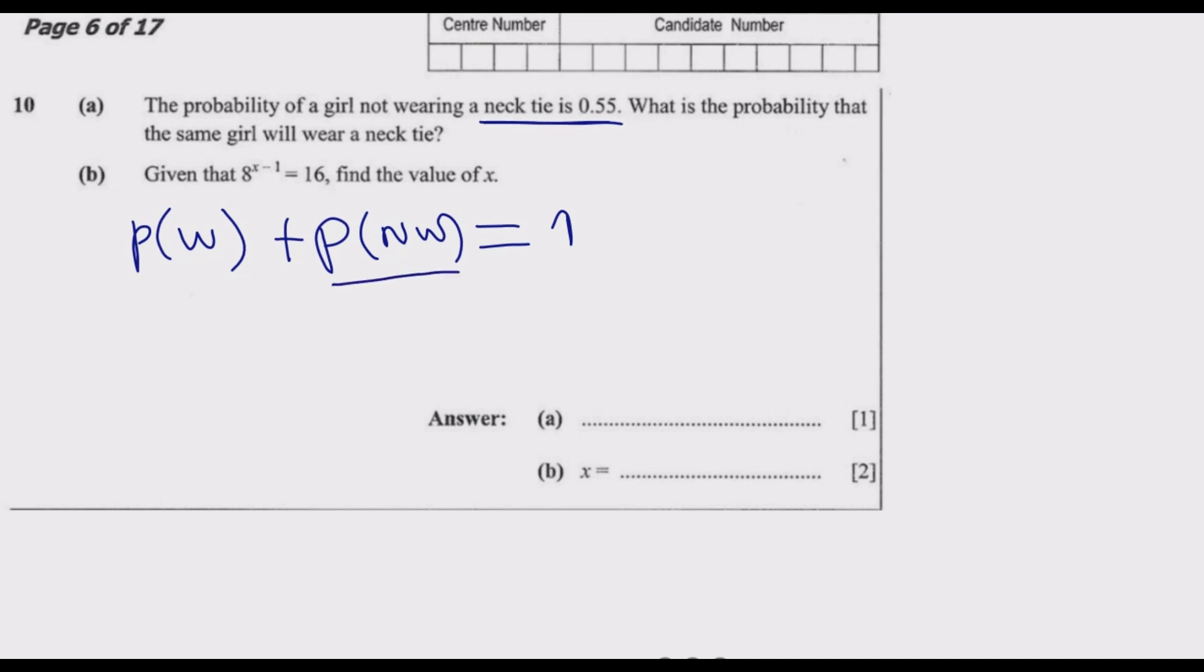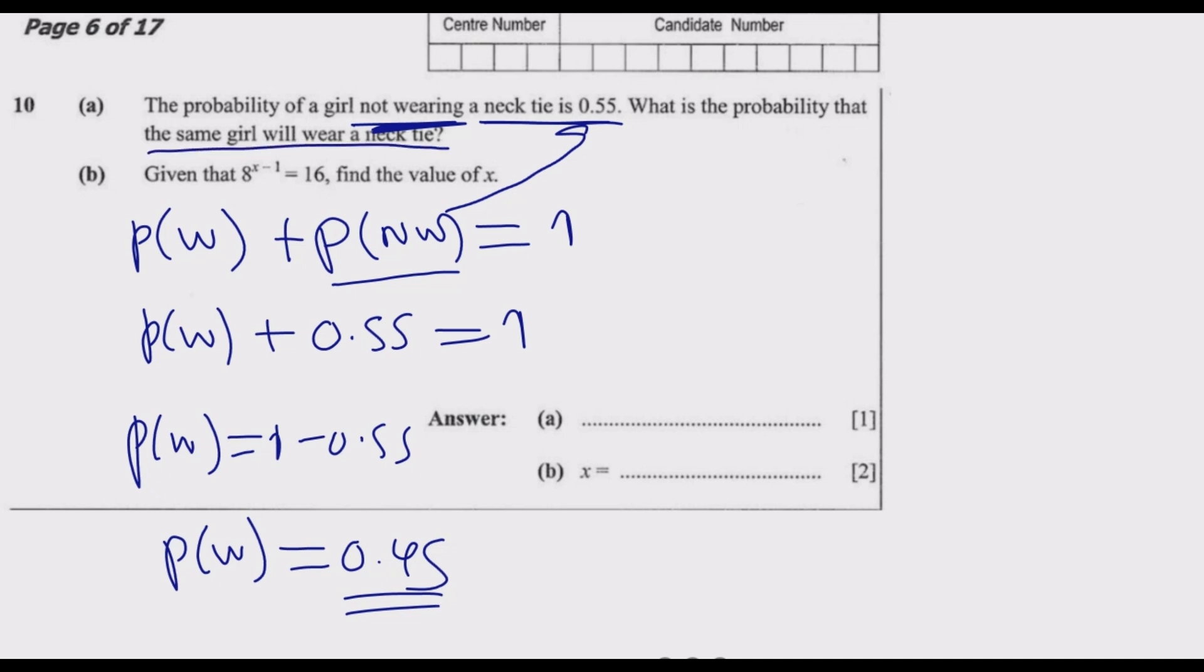We are told that the probability a girl does not wear a necktie is 0.55. So we solve for P(W). Probability that a girl wears a necktie is 1 minus 0.55, which equals 0.45. That's the probability that the girl will wear a necktie. Remember, probability of everything adds up to 1 - that's the key principle we've used here.